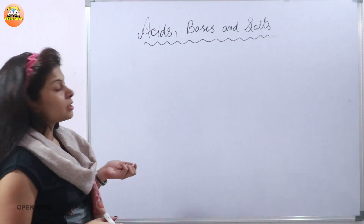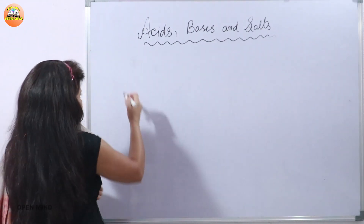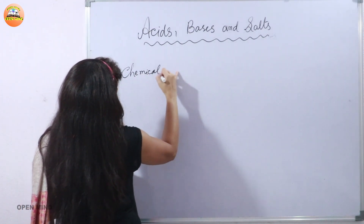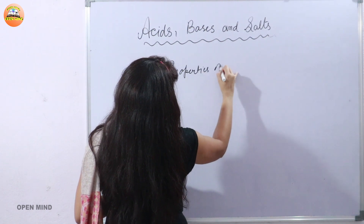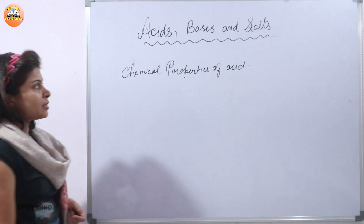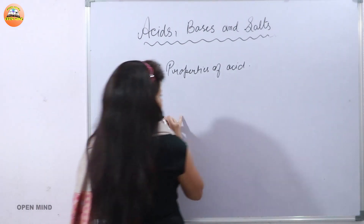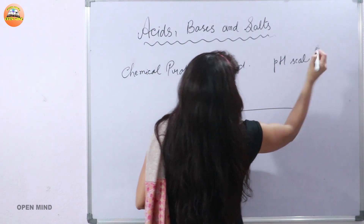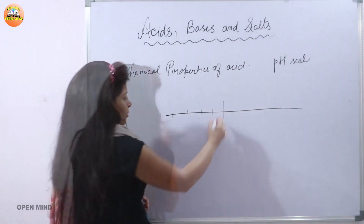Now we will be seeing the different chemical properties of acids. But before you study acids, bases and salts, I'll show you one scale which is called the pH scale. What is this pH scale?